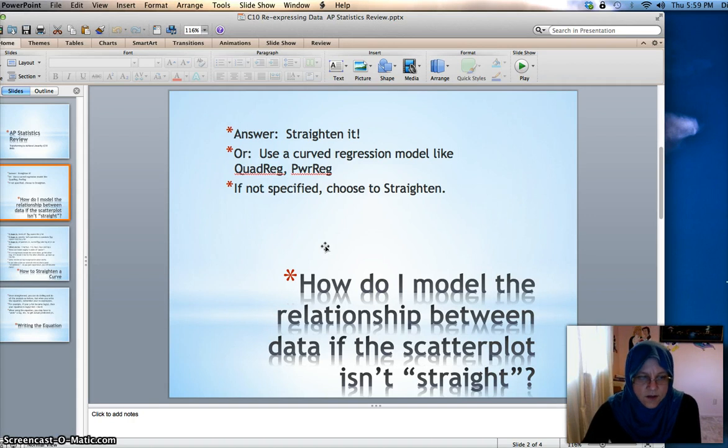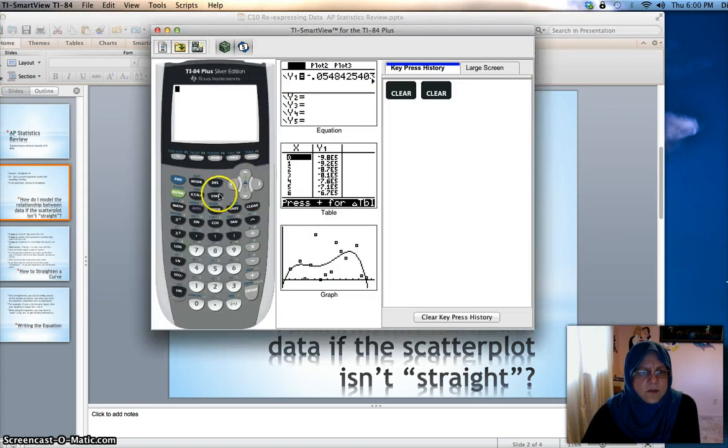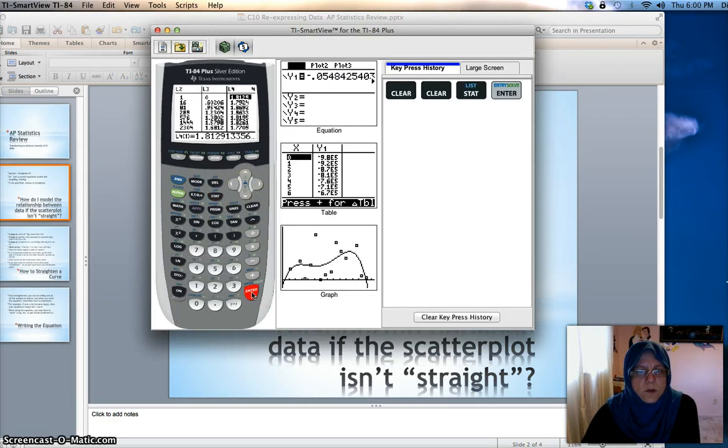So are you completely out of luck? Well, not necessarily. You may be able to straighten the scatter plot through a re-expression. Now in your textbook, we did talk about using curved regression models like QuadReg or PowerReg, fitting a quadratic curve or exponential or logarithmic to the data. You're unlikely to be asked to do that on the AP exam. But there may be something on the AP exam about straightening a scatter plot through re-expression.